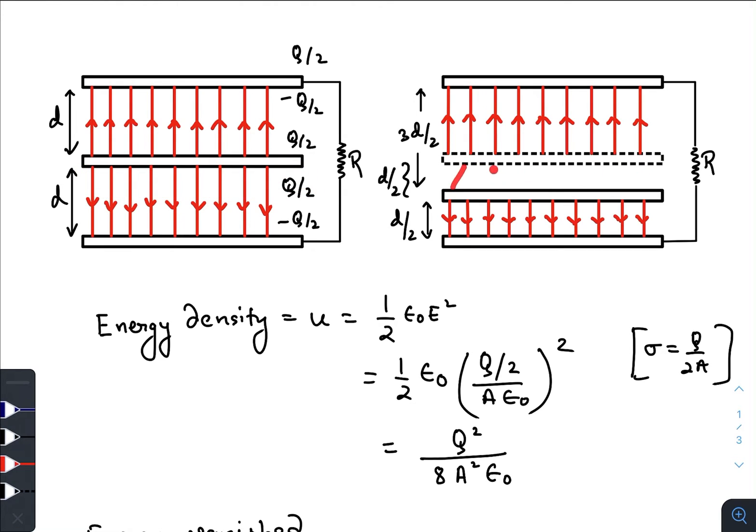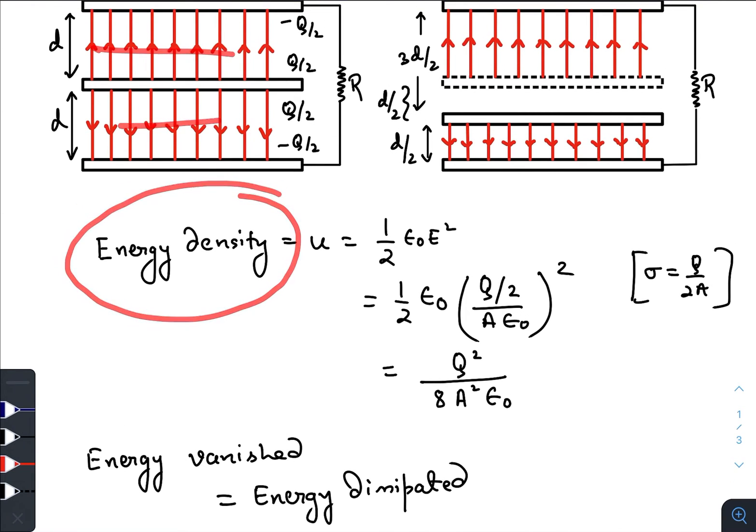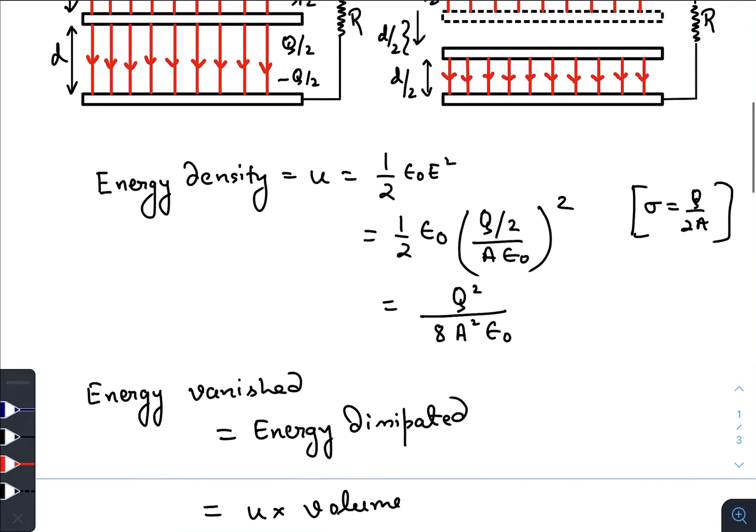We just need to find out the energy that was associated with this electric field that was present in this region. For that we need to first calculate the energy density. Energy density in both regions was same, so we can find out using this formula half epsilon naught E square.